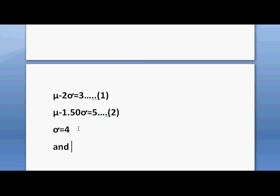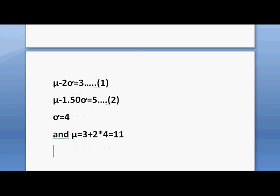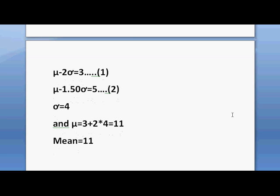If we put the value of sigma into the first equation, we get mu equals 3 plus 2 times sigma, that is 2 times 4, which equals 11. So the required value of mean is 11 and standard deviation is 4. Mean equals 11 and standard deviation equals 4.